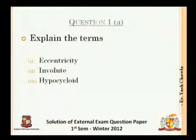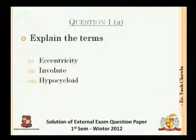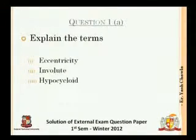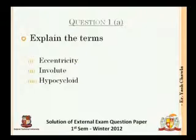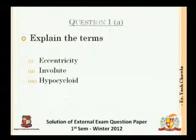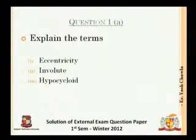Question 1a asked to explain three terms: eccentricity, involute, and hypocycloid. Before starting the solution, there are a few important instructions given in the question paper. You had to attempt any five of the seven questions, numbered one to seven. If you are attempting question number one, you have to attempt 1a, 1b, and 1c — it's a whole question you must attempt together.